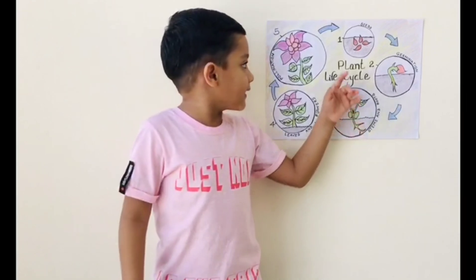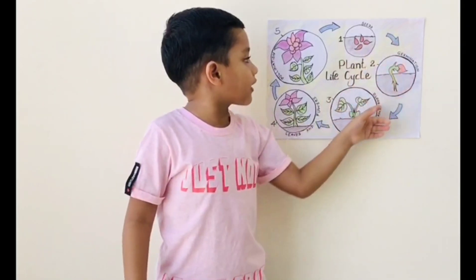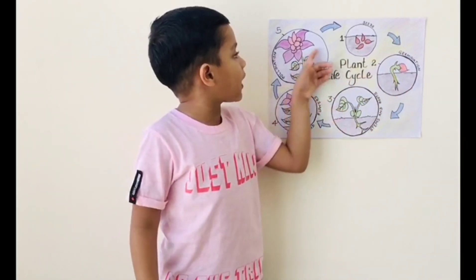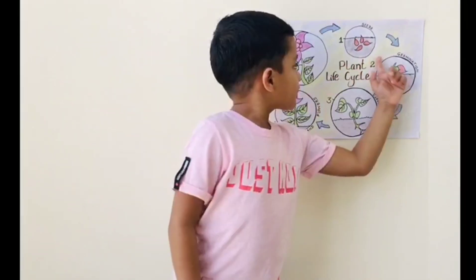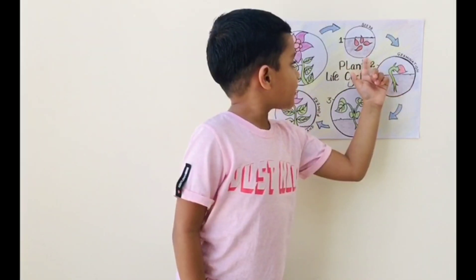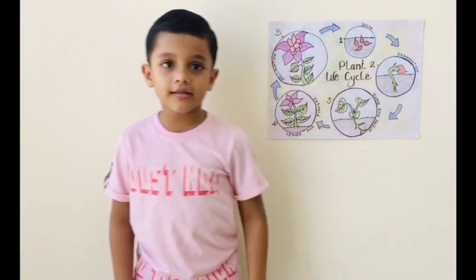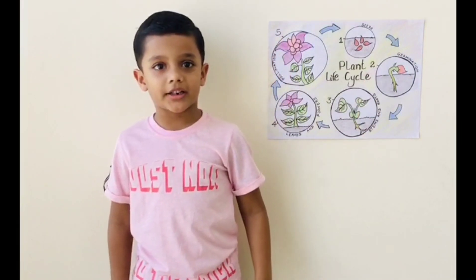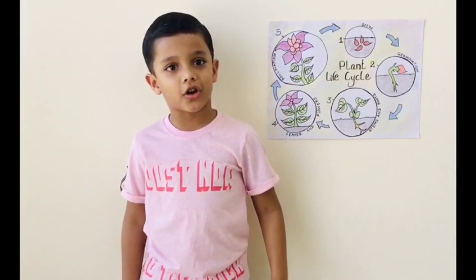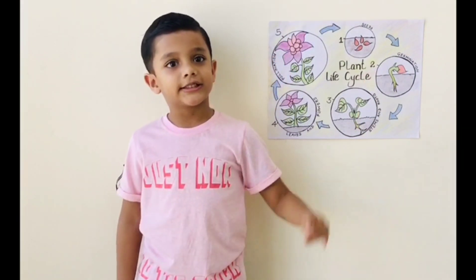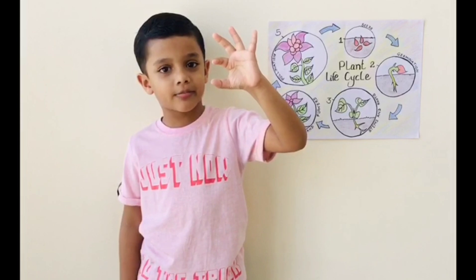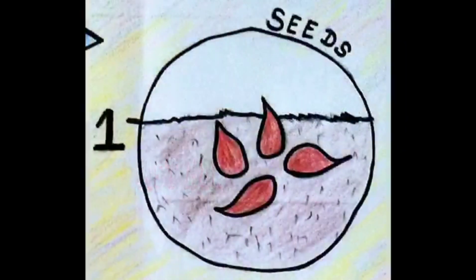This is a life cycle of a plant. Seeds. Seeds are planted in the soil. Inside the seed, there is a tiny plant called an embryo.